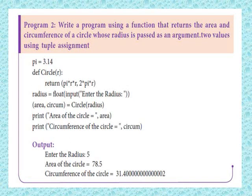Another example: write a program using a function that returns the area and circumference of a circle whose radius is passed as an argument, using tuple assignments. The area of a circle is pi * r squared and the circumference is 2 * pi * r. The pi value is 3.14.